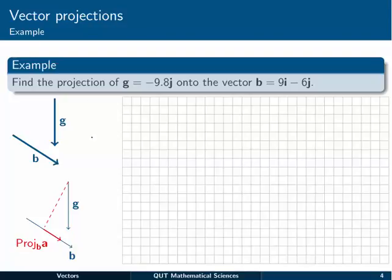Over on the left here, we've got some pictures which roughly show us what g would look like, pointing straight down, and a b vector looking like this, pointing to the bottom right. And we want to find this red one, the bit of g that's moving in the b direction.